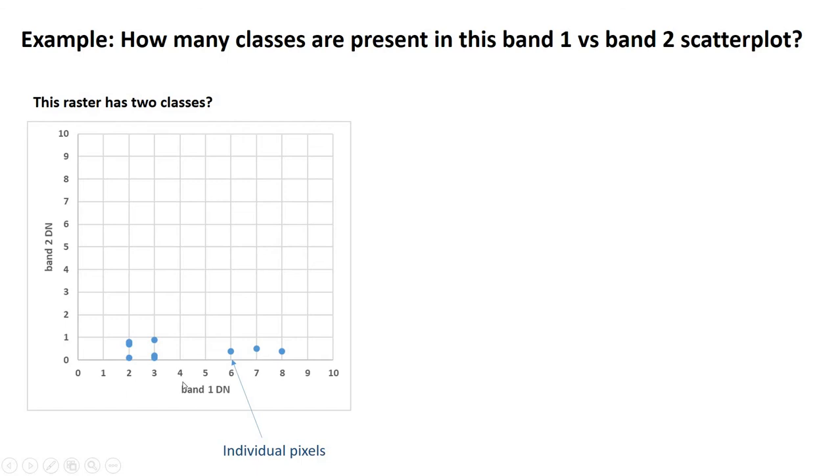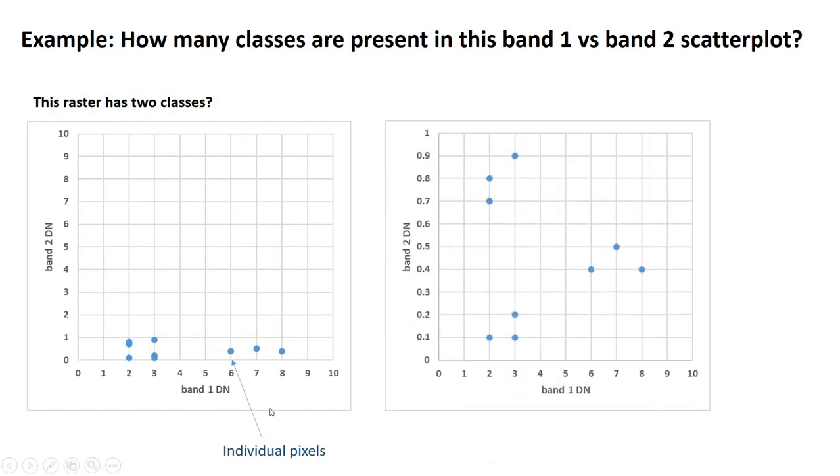But actually, on closer inspection, that's not totally true. What we notice is that the scales on the x and y of this image are the same. They both go from 0 to 10. If we just rescale the y-axis here, and we essentially zoom in and spread things out vertically a bit, suddenly this looks actually like three distinct groups.